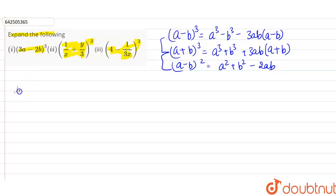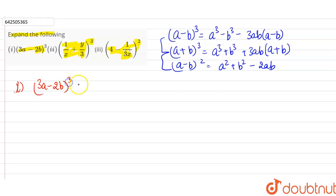The first part of the question is (3a - 2b)³. In this question we are going to use the first identity, where a is 3a and b is 2b.